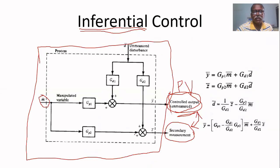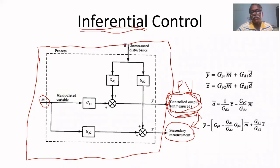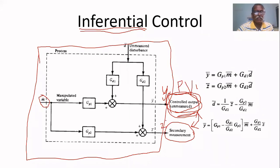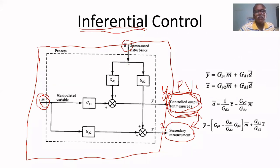In this process, the manipulated variable m is entering the process. Let us assume that m is the manipulated input and b is the disturbance entering. The process has two outputs: one is a measurable output z, and the other is the process variable y, which is to be controlled but cannot be measured. We want to control y by using z. The manipulated variable m is used to control y by measuring z. There is also an unmeasured disturbance entering the process.